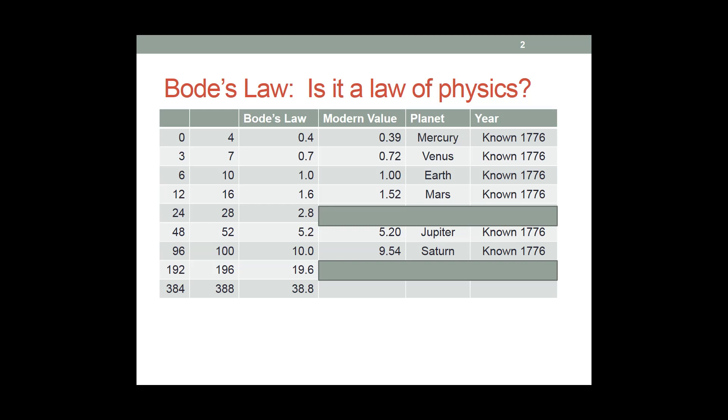You can see that the values for Bode's Law agree reasonably well for most of these. Mars is a little off, 1.52 for the modern value versus 1.6 for Bode's Law. As is Saturn, 9.54 versus 10. But in general, it did a pretty good job of saying, hey, here's where the planets are.